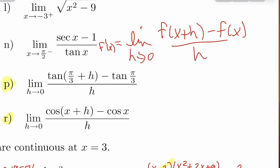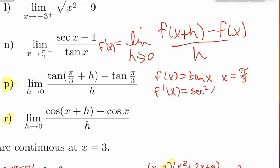If we look at P, the function there is the tangent. The value we are evaluating the first derivative at is pi over three. I would never try to calculate that limit directly. What I would do is say the function is tangent — I know its derivative. The derivative of tangent is secant squared. Then I just plug in pi over three. Pi over three is 60 degrees. The cosine at 60 degrees is one-half, so secant is the reciprocal, which is 2, and squared gives us 4. So the answer to P is four.